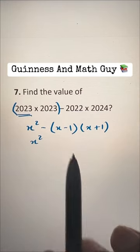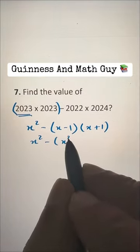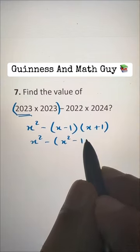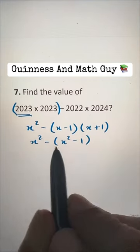So X squared minus 1 squared will be in this bracket X squared minus 1 squared. That is also 1. And now we can open the bracket.